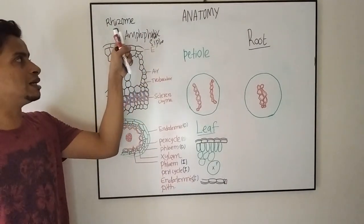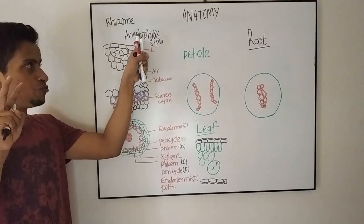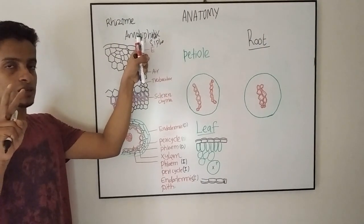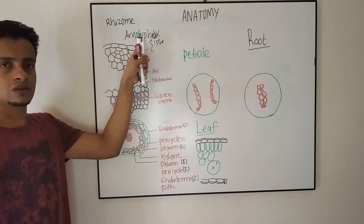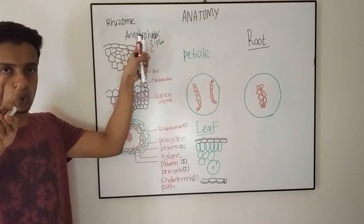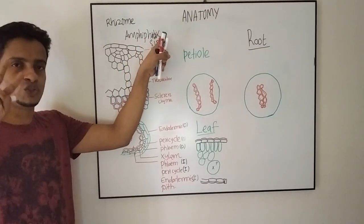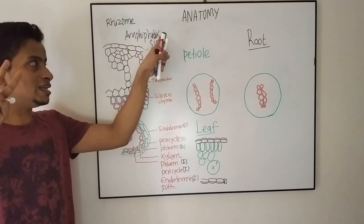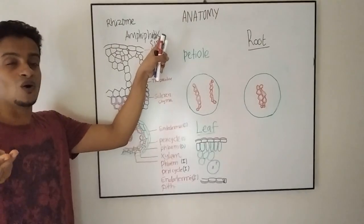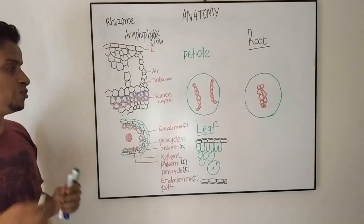What is amphi? The term amphi represents two. Amphi stomatal condition — you might have heard about amphi stomatal condition — refers to stomata on both upper and lower epidermis. So amphi means two sides, on two sides of the xylem. So this is known as amphifloic siphonostele.